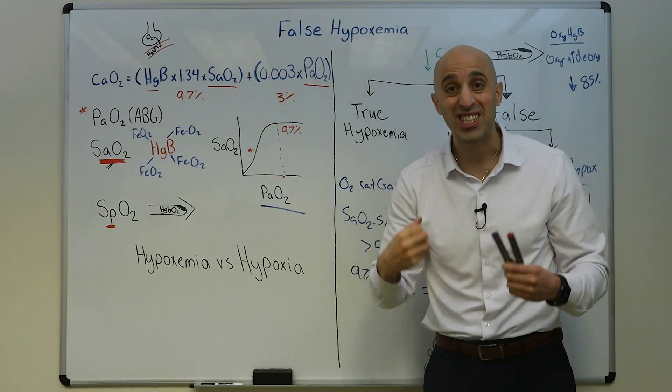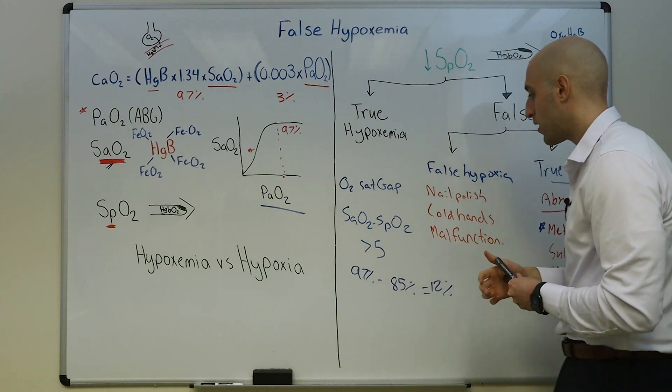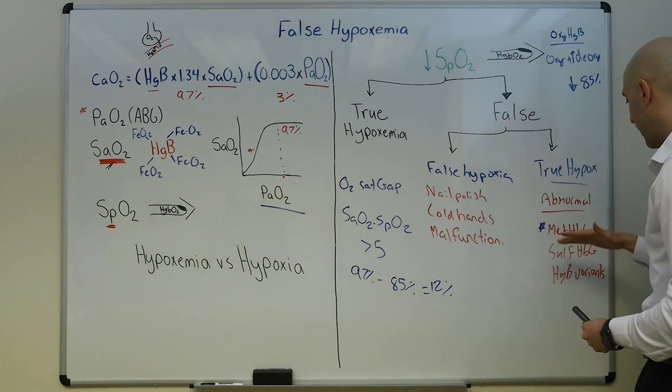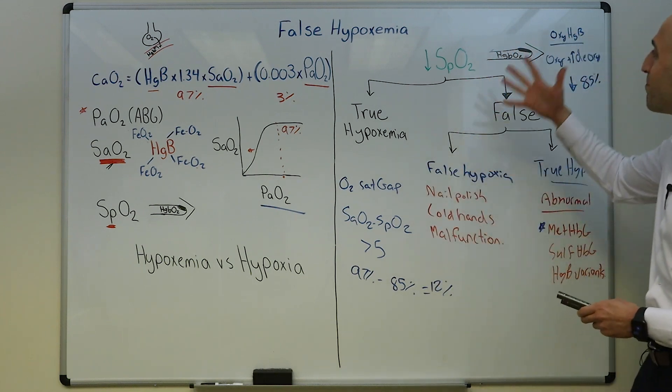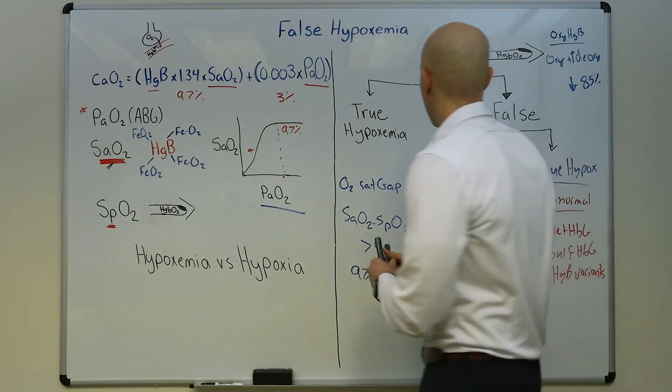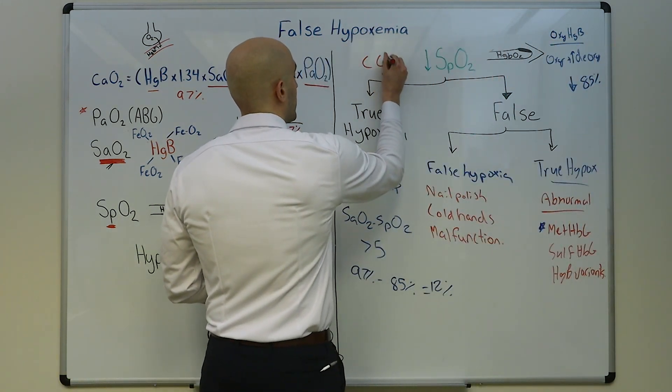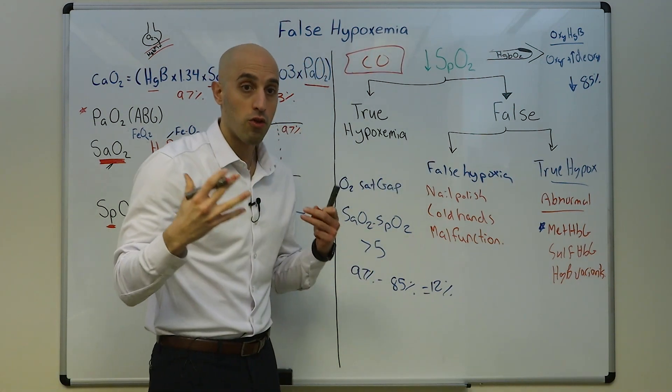In reality, you may have some concern for methemoglobinemia based on how the blood looks, like that chocolate-colored blood, or if the patient received a medication that induces oxidative stress, but these are other ways you can get to this diagnosis.